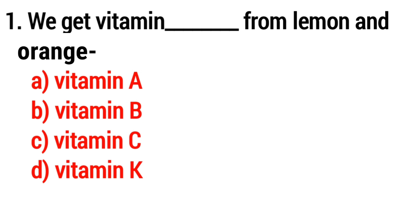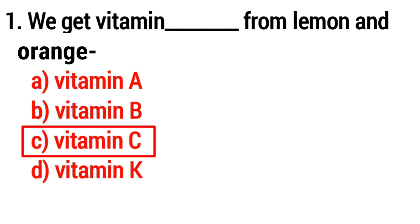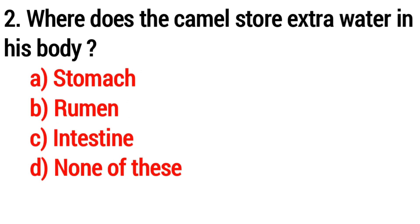Question number one: we get vitamin blank from lemon and orange. Answer: option C, Vitamin C. Question number two: where does the camel store extra water in his body? Answer: option B, rumen.